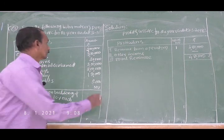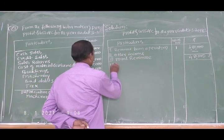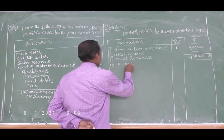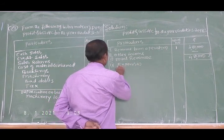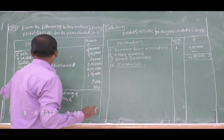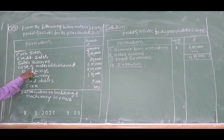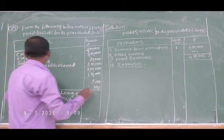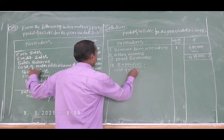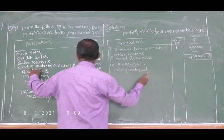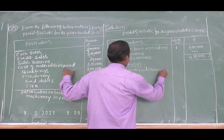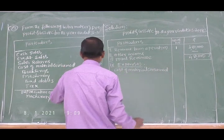Next, the fourth one: expenses. Cost of material consumed — three lakh.